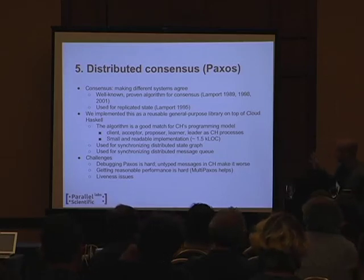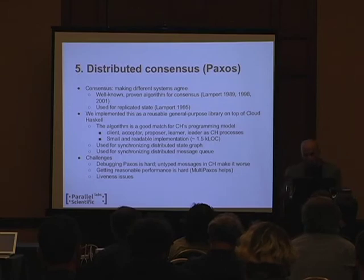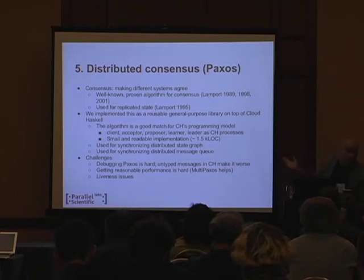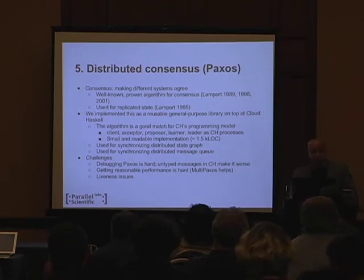We implemented Paxos as a general-purpose library on top of Cloud Haskell. This is actually a fantastically good match. If you read the Paxos papers, it's described in pseudocode where all elements of Paxos are represented as processes that communicate by sending messages — the client, acceptor, proposer, learner, and leader. We got an extremely small and extremely readable implementation of Paxos, for an algorithm that is allegedly notoriously difficult to implement. Our final code wound up being very close to the pseudocode in the papers, which is reassuring in terms of correctness.